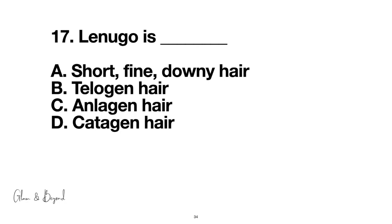Number seventeen: lanugo is... A, short, fine, downy hair; B, telogen hair; C, anagen hair; D, catagen hair. The answer is A, lanugo hair is short, fine, downy hair.